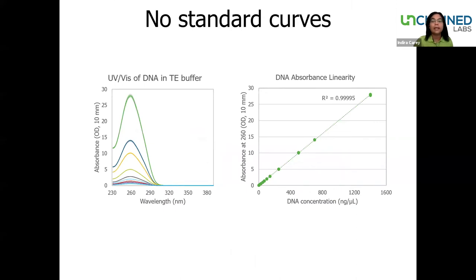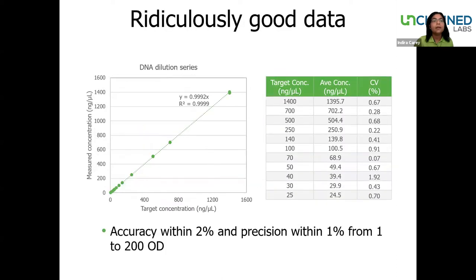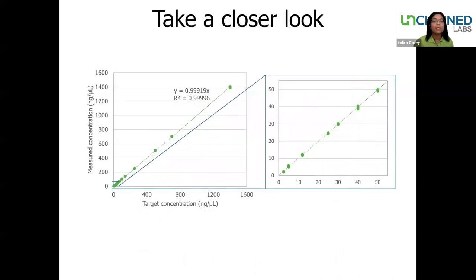Here we're showcasing the linearity and reproducibility of a DNA dilution series, and the R-squared value indicates great correlation. Here's another look at linearity and reproducibility — in this case, a DNA dilution series of calf thymus DNA from 25 nanograms per microliter up to 1,400 nanograms per microliter. Note the low CV values across this dilution range. Zooming in on the lower end of this DNA dilution series really highlights the reproducibility between quadruplicate samples, even at these lower concentrations.